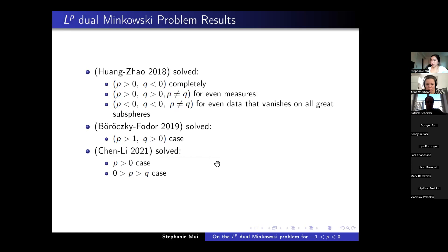This problem has been well studied. Huang and Zhao in 2018 provided solutions in several quadrants of P and Q. When P > 0 and Q < 0, they provided a complete solution to the existence question. When P > 0, Q > 0, and P ≠ Q, they found a solution for symmetric measures. When P < 0, Q < 0, and P ≠ Q, they found a solution for even data that vanishes on all great subspheres—a pretty strong condition. The P ≠ Q assumption is needed for the approach to work, as I will explain later.